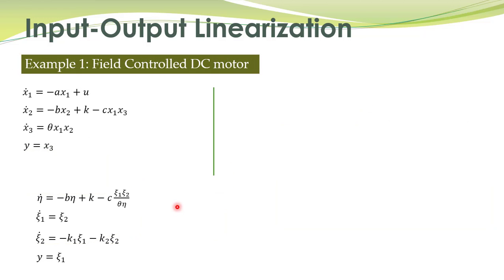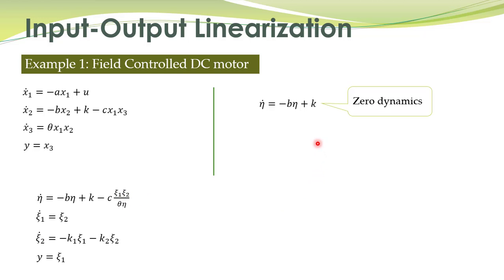Let's apply this to the example from the previous lecture. For the nonlinear system, we obtained input-output linearization and selected k1 and k2 appropriately to make the linear dynamic part stable. To study the stability of internal dynamics, by the lemma we can study the stability of zero dynamics. For this system, we substitute xi1 and xi2 equal to zero to obtain the zero dynamics.